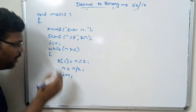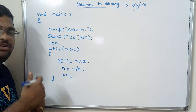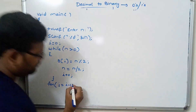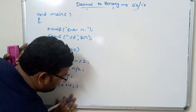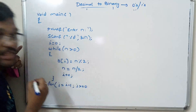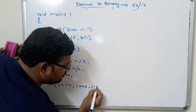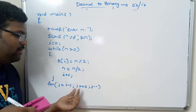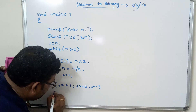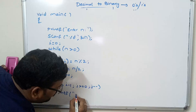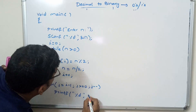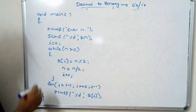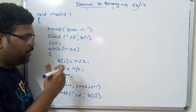Whenever n is greater than 0 the loop executes; when n is not, the loop terminates. Now to print, we start with j = i minus 1, loop while j >= 0, and decrement j with j--. This prints from the higher index down to the lower index. We simply write: printf("%d", b[j]).